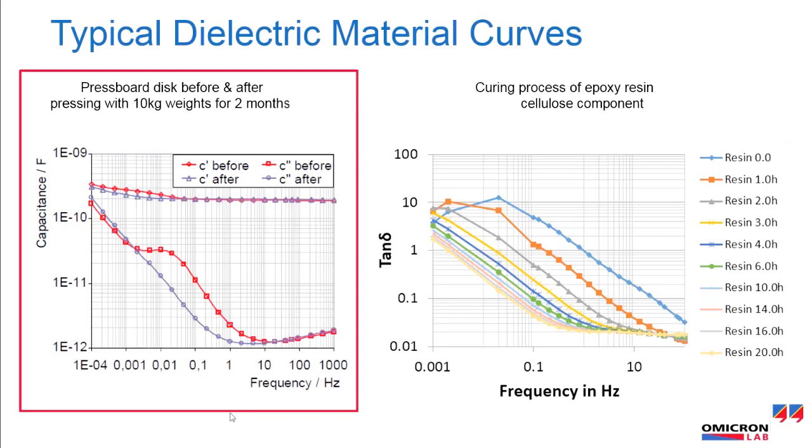Polarization caused by aging processes often show the same curve changes and curve progressions like moisture in the dielectric material. A differentiation is only possible in the permittivity or capacitance chart.